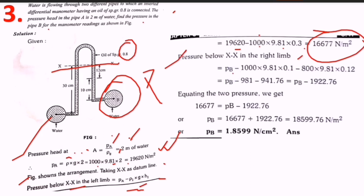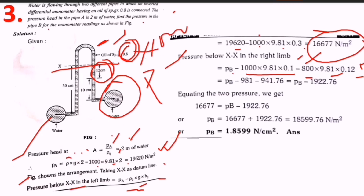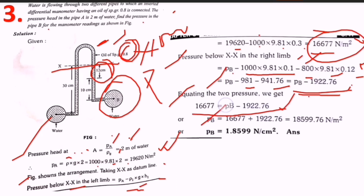Pressure in the right limb below XX equals pb minus rho one times g times h1 minus rho oil times g times h, where oil density is 800 and the oil height is 0.12 m. This gives pb minus 981 minus 941.76, equaling pb minus 1922.76. Equating left and right: pb minus 1922.76 equals 16,677, so pb equals 18,599 N/m².